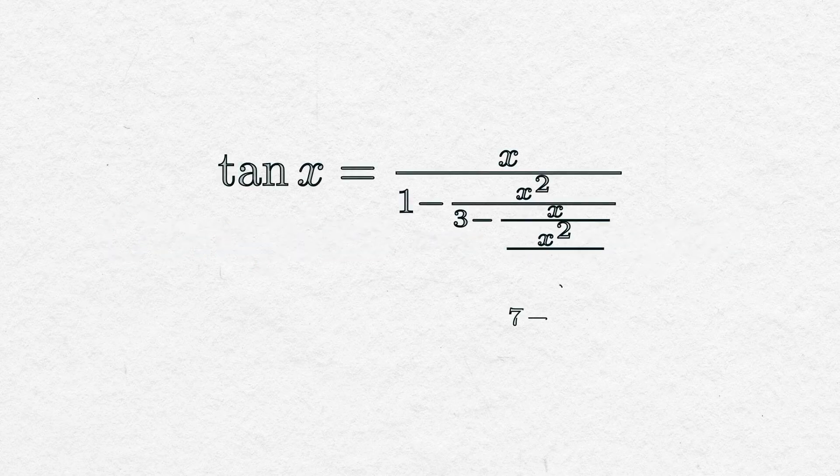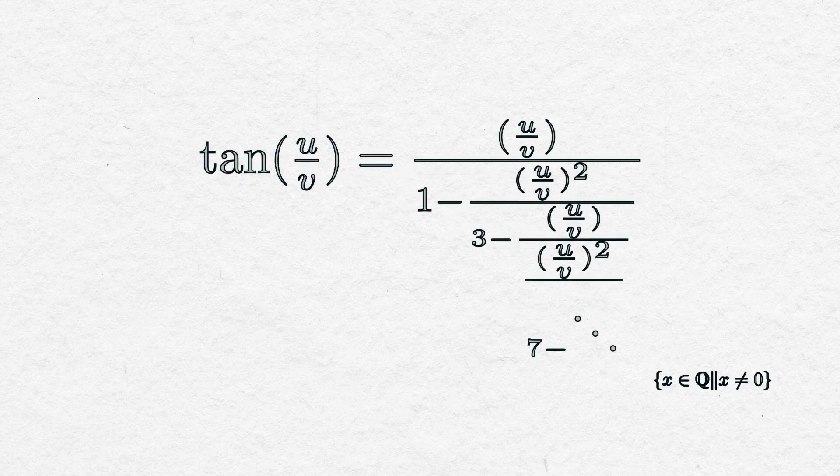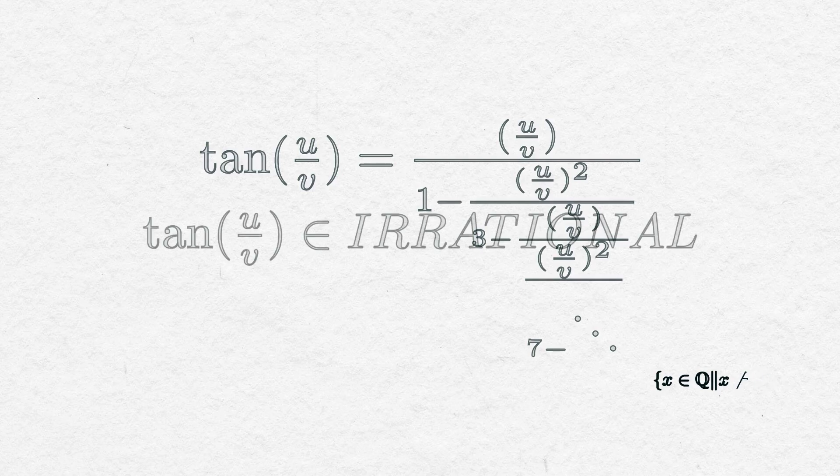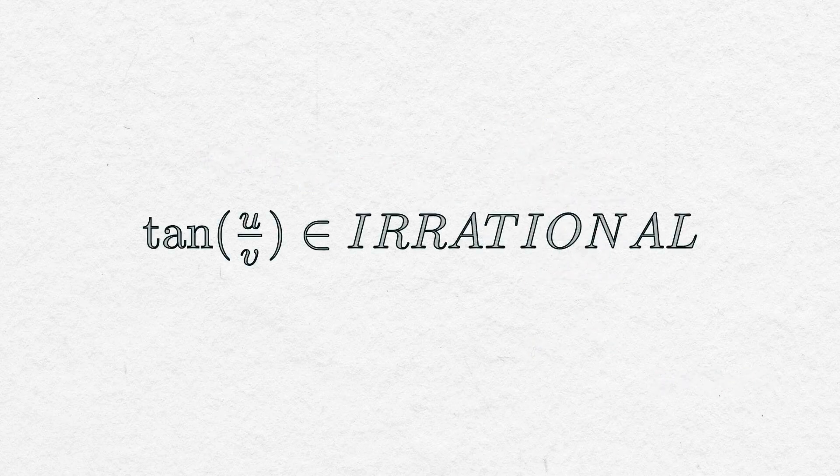He used this expansion of tan and proved that for all rational values of x, except 0, tan will give us an irrational number. It was an if-then relationship.